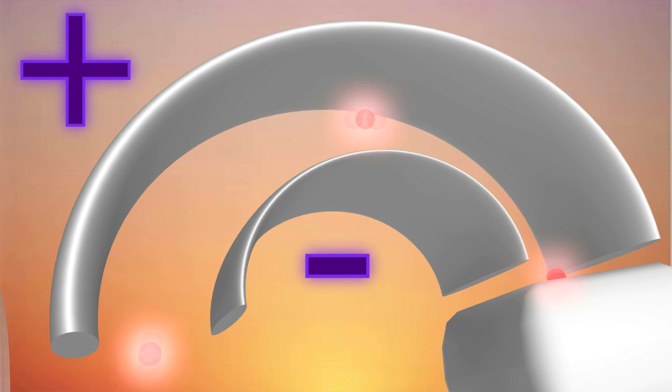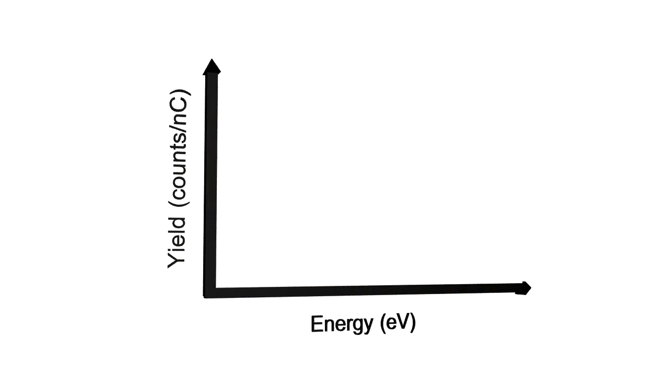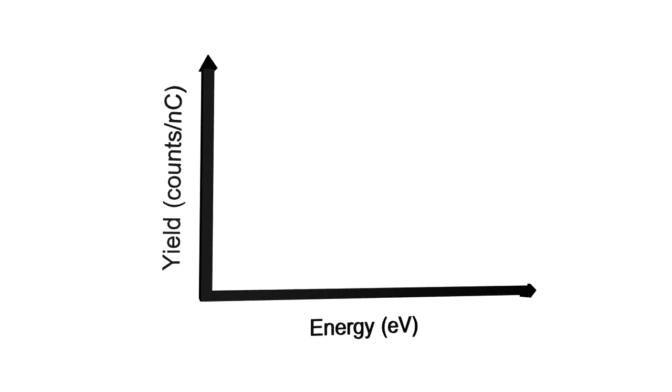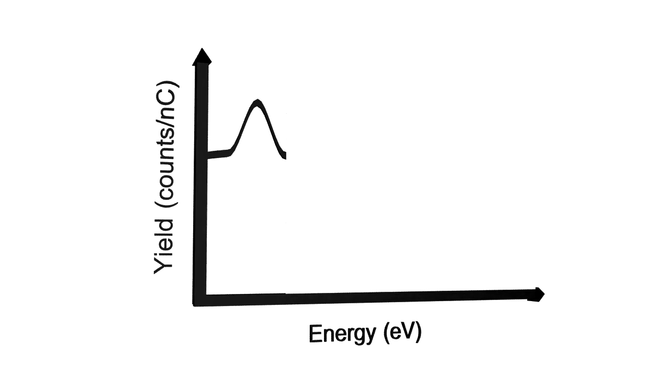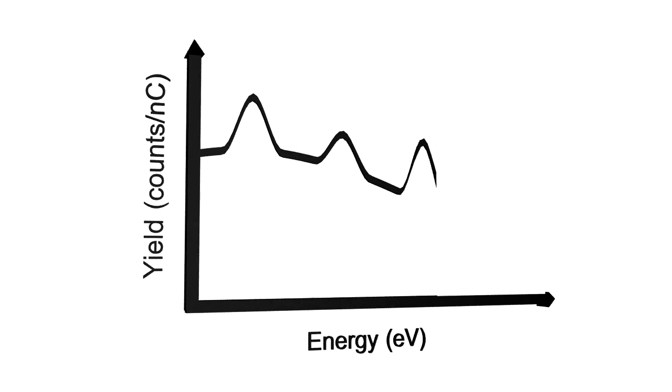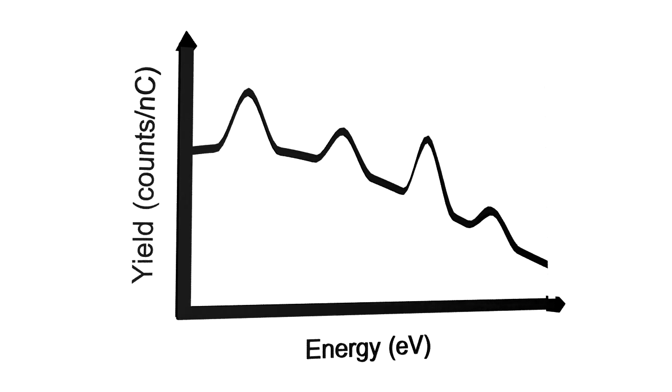Only if the ions energy is just right, it can pass through the analyzer and create the signal by interacting with the detector. By changing the potential between the walls, the operator can scan through a wide energy range in order to find out the energy of the emitted particles.